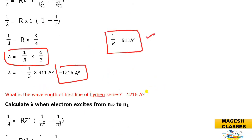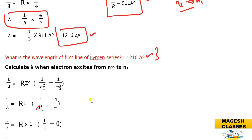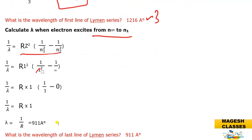The first line of the Lyman series is 1216 Å (transition n=2 to n=1). For any energy transition from n=3, n=4, or n=5 returning to n=1, it is called the Lyman series. The last line of the Lyman series is the electron transitioning from n=∞ to n=1, giving 1/λ = R × (1 − 0) = R, so λ = 911 Å.